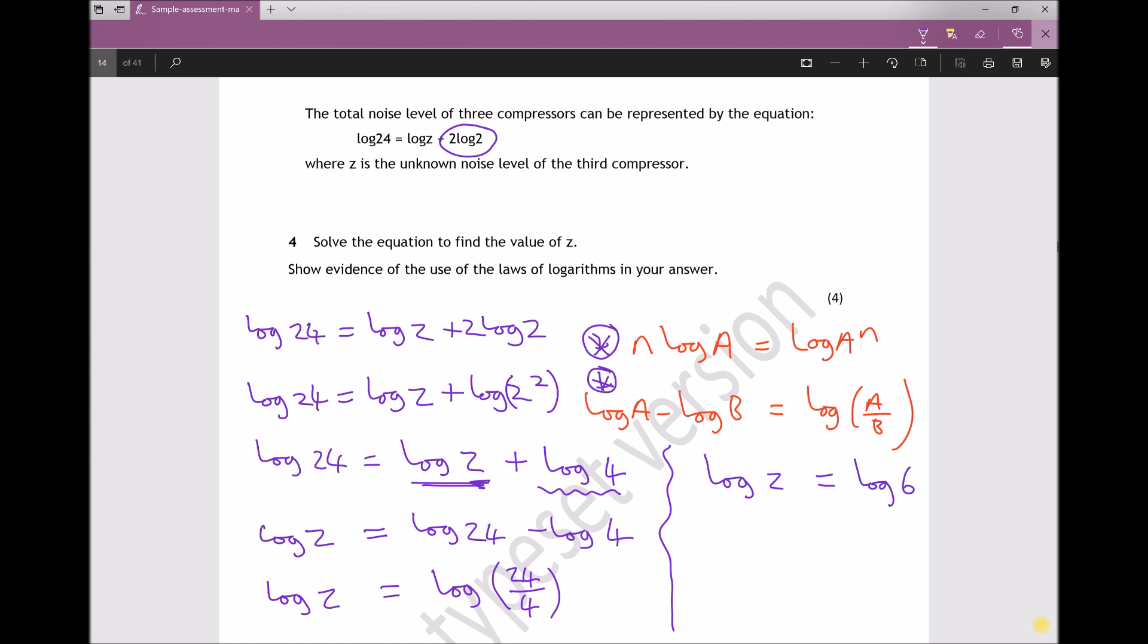If logZ = log6, then by inspection, Z must equal 6. So we've found the value of Z and used logarithms in the process.